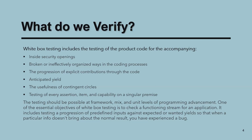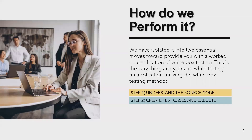Testing should be done at the unit level of software development. We verify each and every aspect of the code — that is white box testing. We verify the functionality of an application, which can include testing progressions of predefined input against expected output, so that when particular input does not produce the expected results, we have found a bug.